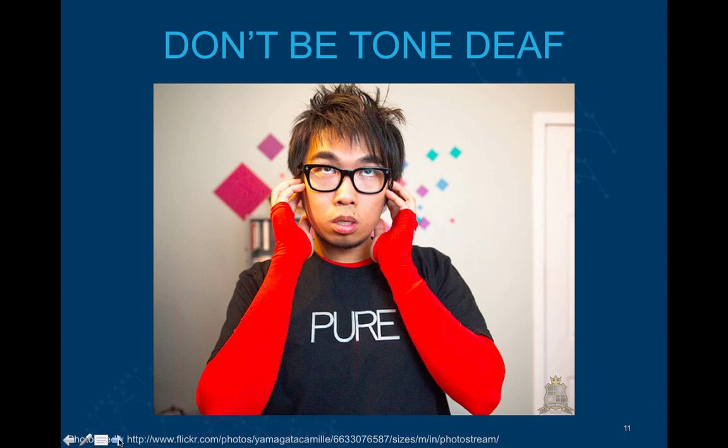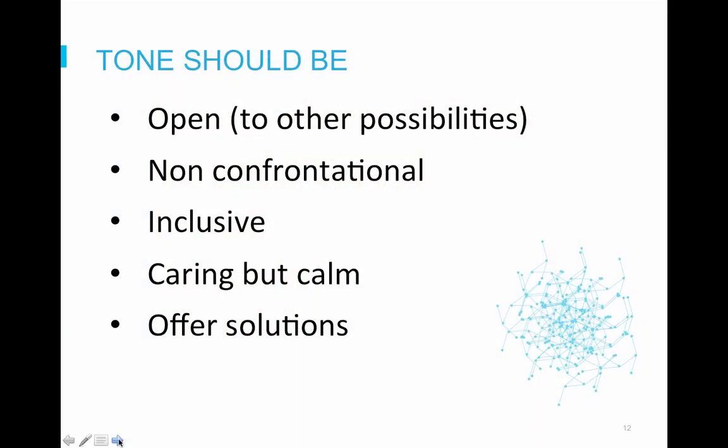Now let's talk about tone, which really is one of the most important things to consider during a conversation. Since most wiki discussions are written, it's important to think about the words you use and the way you structure the conversation, the details you provide, and how that will seem to others. The tone you should aim towards is open — consider that there are always other perspectives and valid points of view. You should be non-confrontational, be careful to use language that doesn't come across as angry or aggressive, and be inclusive — try to include others and ask for their opinions.